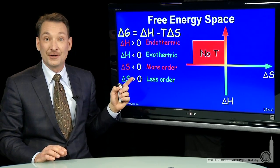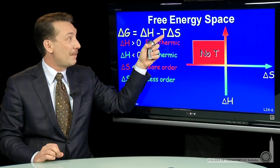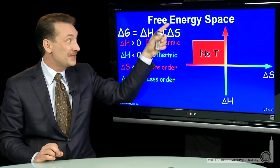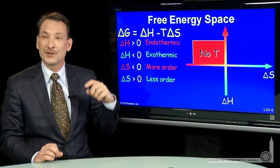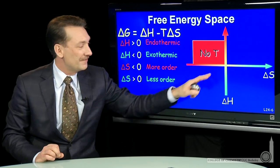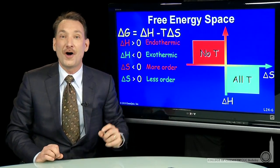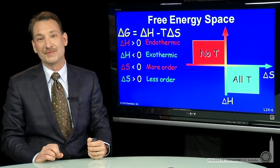And an increase in entropy, that's a positive delta S times a positive temperature with this minus sign, both terms will always be negative. So when delta S is positive and delta H is negative, that's favorable for all temperatures. Delta G will always be negative.